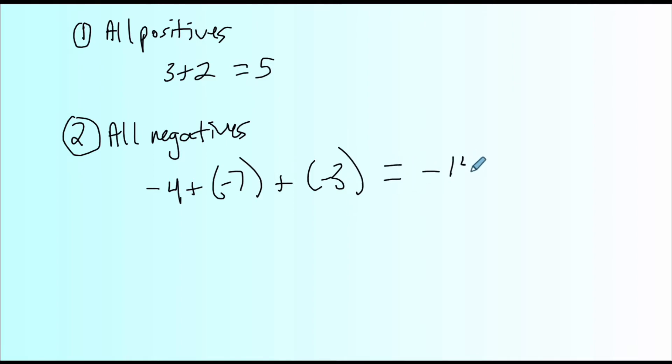In total, you have 14 dollars of debt. So when you're adding all negative numbers, it's similar to adding all positives in that you add the values 4, 7, and 3, and your final answer is negative. I also showed this with integer chips. You've got four red chips, seven red chips, three red chips, in total, 14 red negative integer chips.